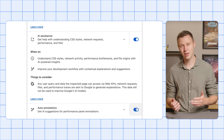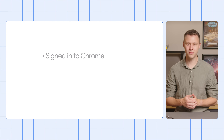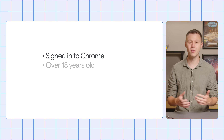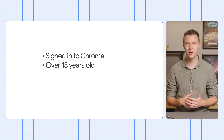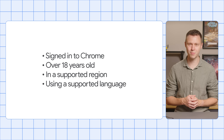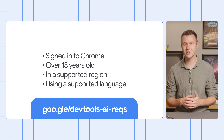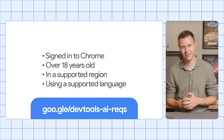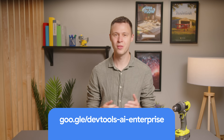Note that those features are only available for users signed into Chrome who are at least 18 years of age, are in a supported region, and have DevTools set to a supported language. To learn more about the latest requirements, visit this link. If your Chrome installation is managed by an organization, your administrator needs to enable AI innovations using an enterprise policy, and you'll find more information through this link.